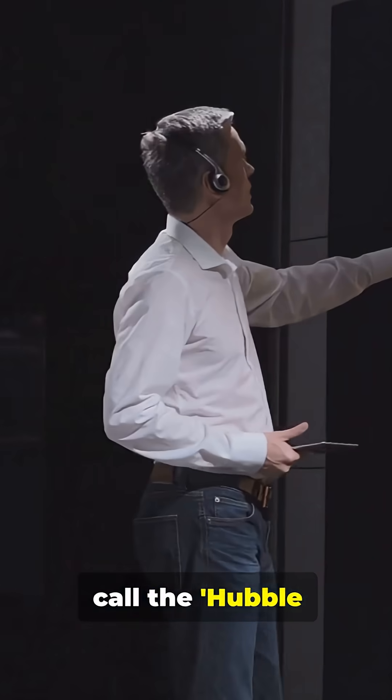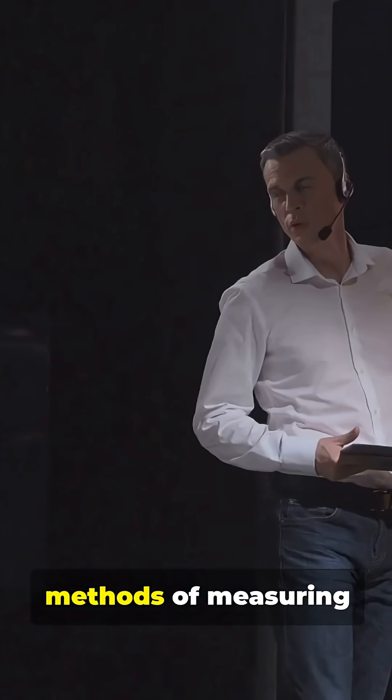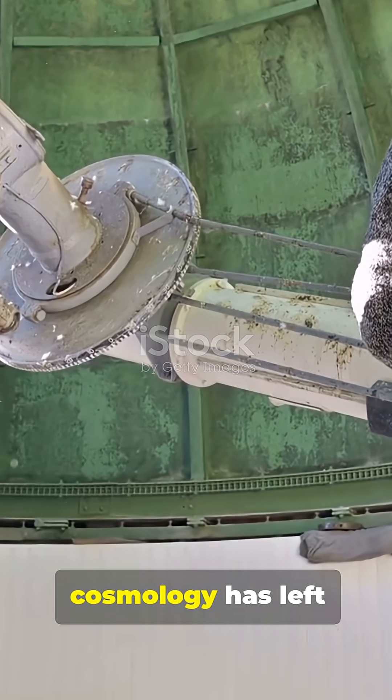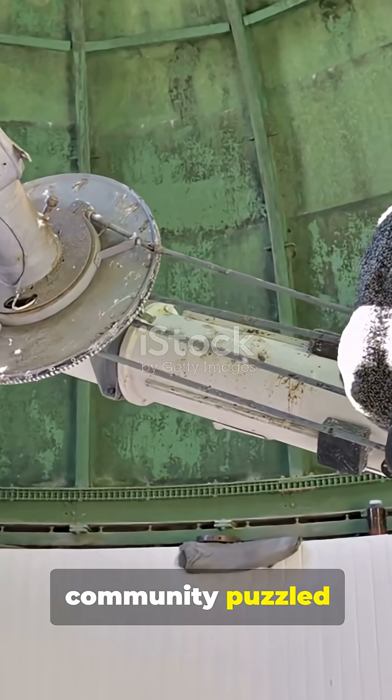Scientists are facing what they call the Hubble tension. Different methods of measuring the universe's expansion rate give conflicting results. This crisis in cosmology has left the scientific community puzzled for years.